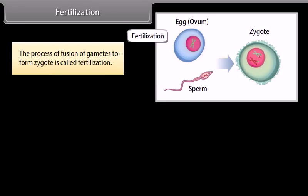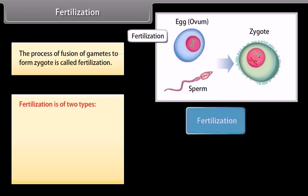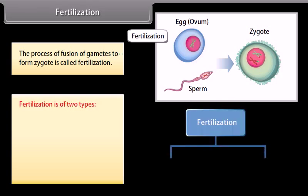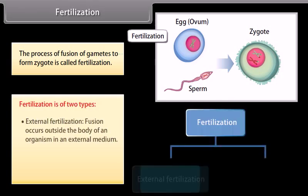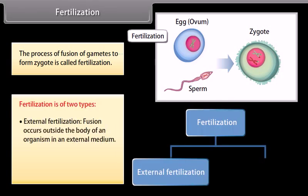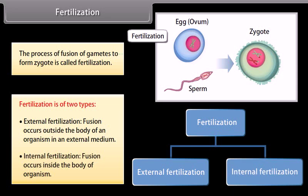Fertilization is the process of fusion of gametes to form a zygote. Fertilization is of two types: external fertilization, where fusion occurs outside the body of an organism in an external medium, and internal fertilization, where fusion occurs inside the body of the organism.